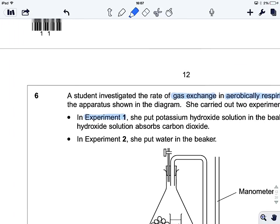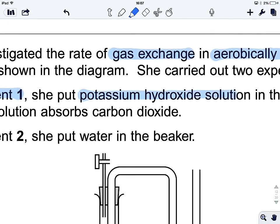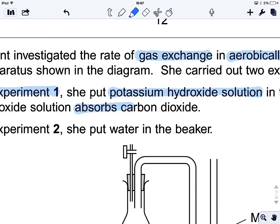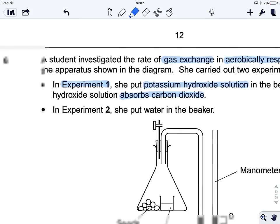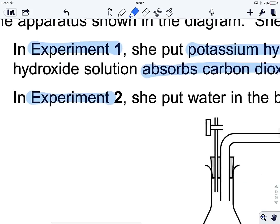She put some potassium hydroxide solution, so there's potassium hydroxide in there. And we should also put in what the potassium hydroxide does - it absorbs carbon dioxide. In experiment two, there was only water, so no potassium hydroxide there.